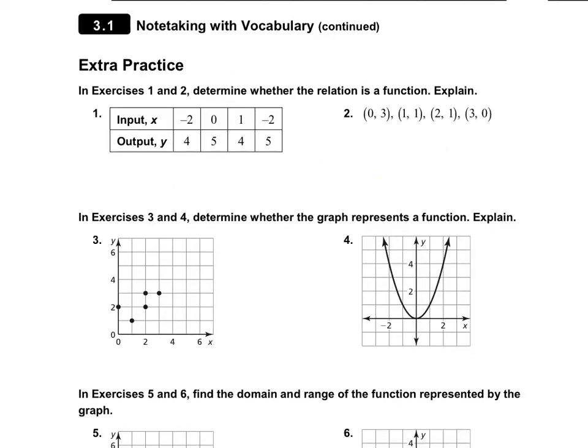On number one and two, it says determine whether the relation is a function and we need to explain. So remember the definition of a function is each input has only one output. So if I take a look at number one, negative two has an output of four, but over here negative two also has an output of five. So number one is not a function because the input of negative two has two outputs, which are four and five.